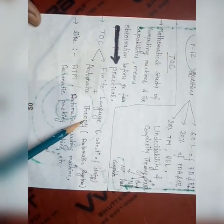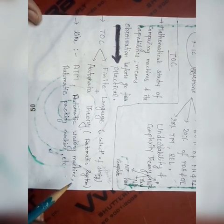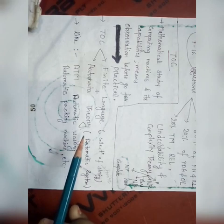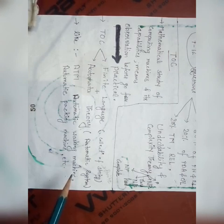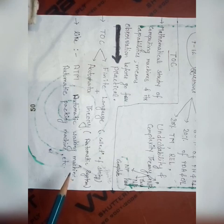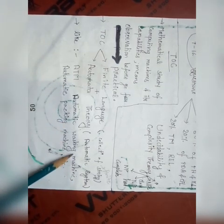TOC is a combination of formal language and automata theory. Formal language is a collection of finite strings based on some conditions. Automata theory is defined as an automatic system where energy, material, and information are transmitted and used for performing functions without direct participation of man — like ATM, automatic washing machine, automatic packing machine, etc.